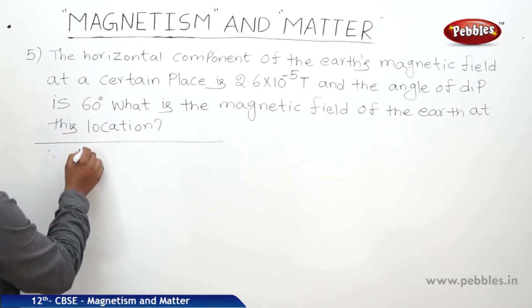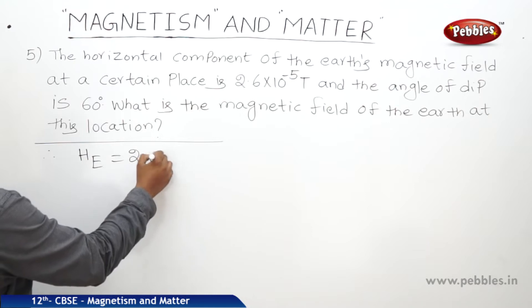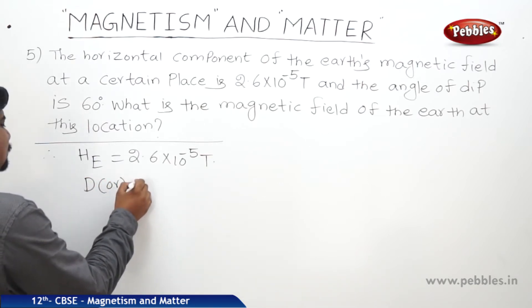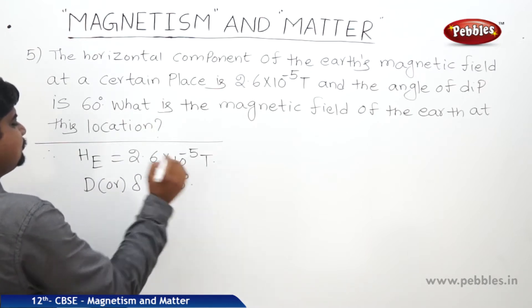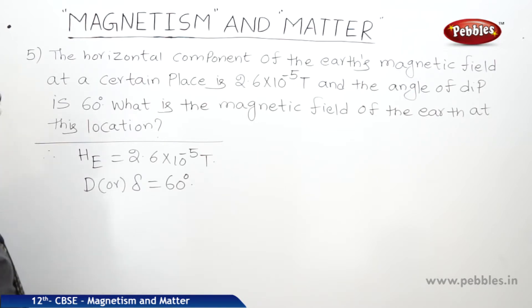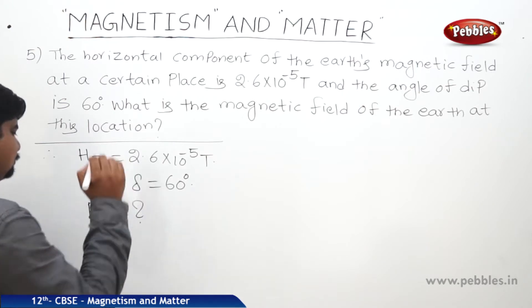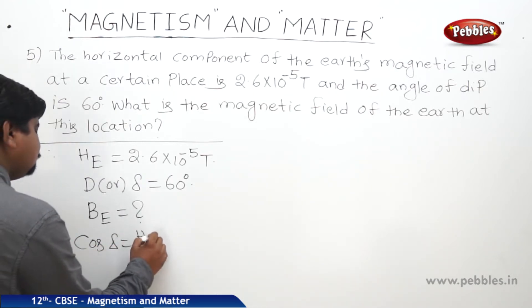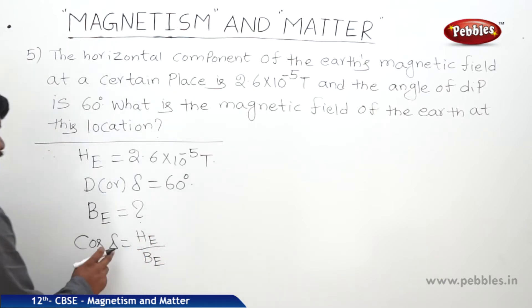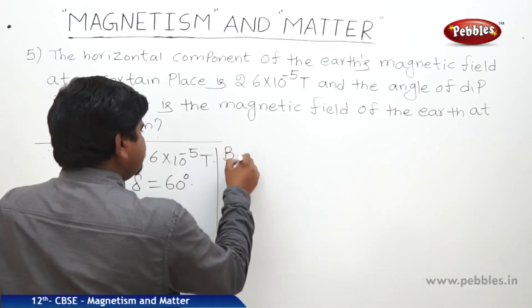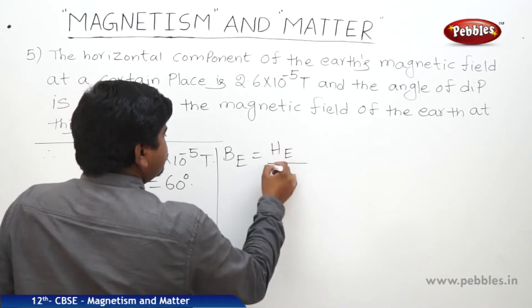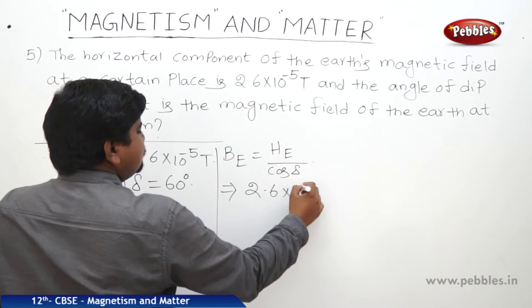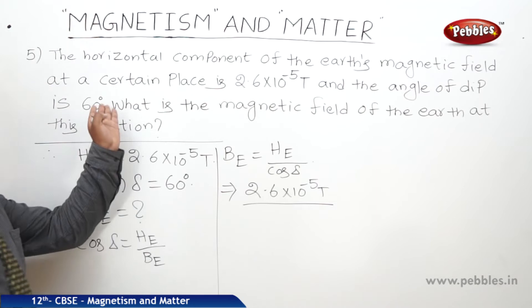The horizontal component of the Earth's magnetic field is He = 2.6×10⁻⁵ tesla. The angle of dip delta is equal to 60 degrees. Using the relation cos(delta) = He / Be, we get Be = He / cos(delta).